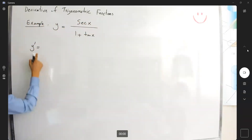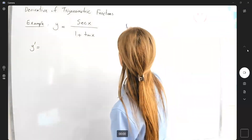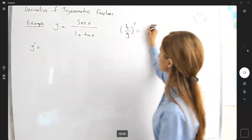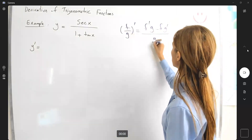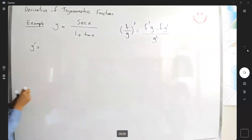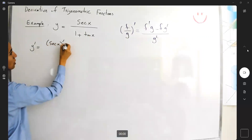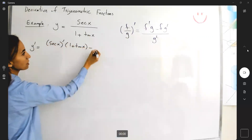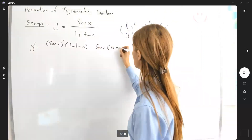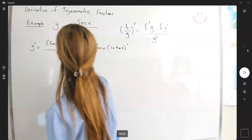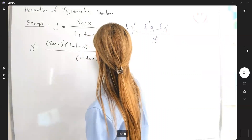To find y prime of x, we're going to apply the quotient rule. If you have f divided by g for two differentiable functions, it is f prime g minus f g prime, divided by g squared. So the derivative of the numerator secant times 1 plus tangent of x, minus secant of x times the derivative of 1 plus tangent of x, all divided by 1 plus tangent of x to the second power.